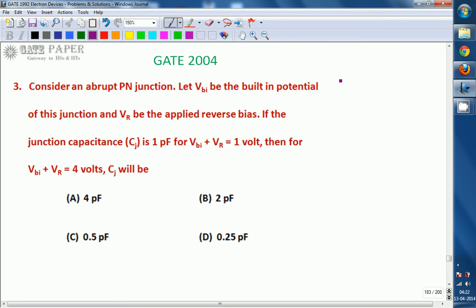Consider an abrupt PN junction. Let VBI be the built-in potential of this junction and VR be the applied reverse bias. If the junction capacitance is 1 pF for VBI plus VR equals 1 volt, then for VBI plus VR equals 4 volts, what will happen to junction capacitance?